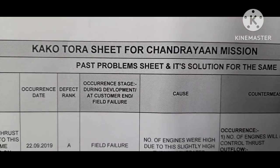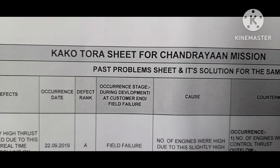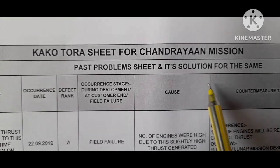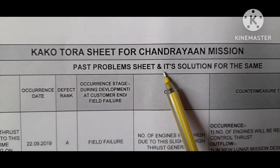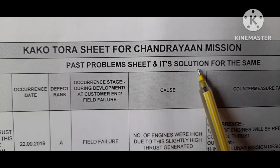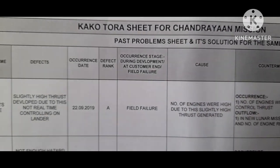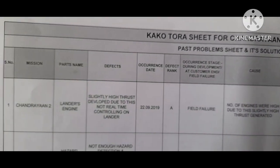Kako Tora sheets are used in industry to maintain problem history as well as their solutions. So let's try to understand with a better example — the Chandrayaan missions.